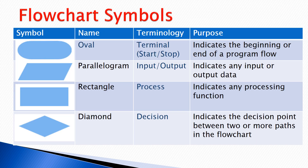The first flowchart symbol is the oval, which represents the start and stop of a program flow. When we write any algorithm, the oval represents the starting and stopping of our algorithm.